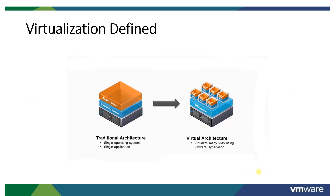In earlier times, we used to have hardware with a single operating system installed, and on top of it a single application running. For example, a server with 64 GB RAM where hardly 20 GB was in use by the application. So 44 GB of RAM was simply wasted.